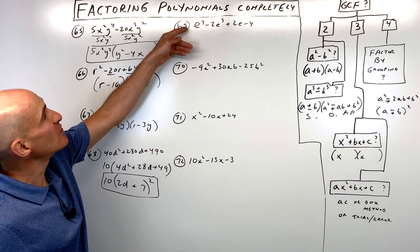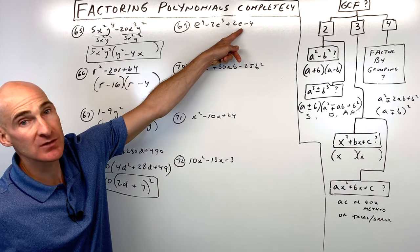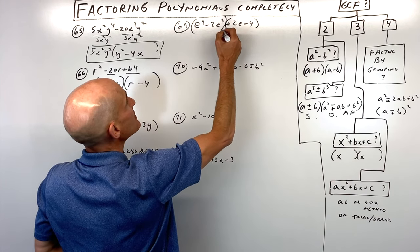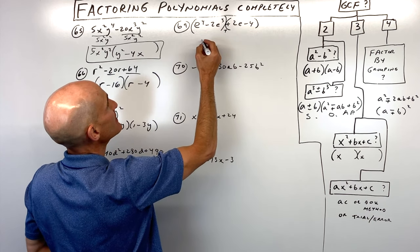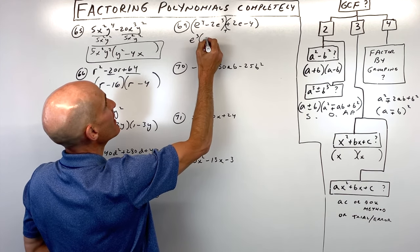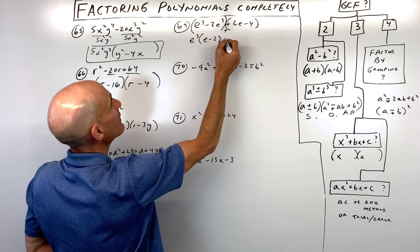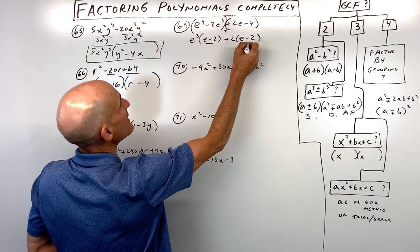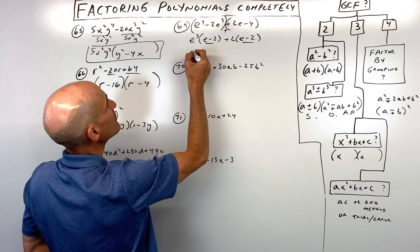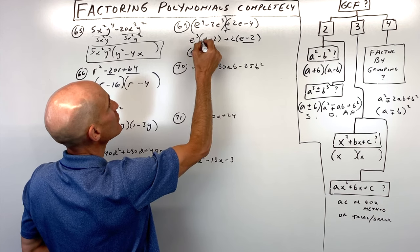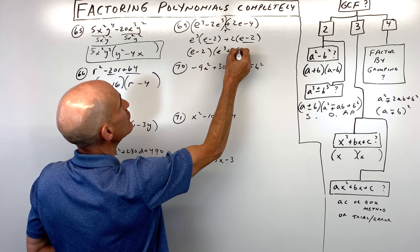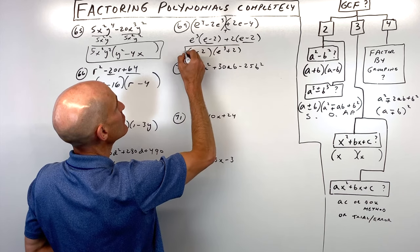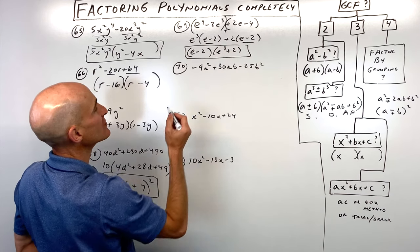Number sixty-nine has four terms, so we use factoring by grouping. Group the first two and last two — they're added together. Factor out the GCF from each pair. We have e minus 2 in common, so factor that out to get e minus 2 times e cubed plus 2. This is not a sum of two cubes, so we can't factor further.